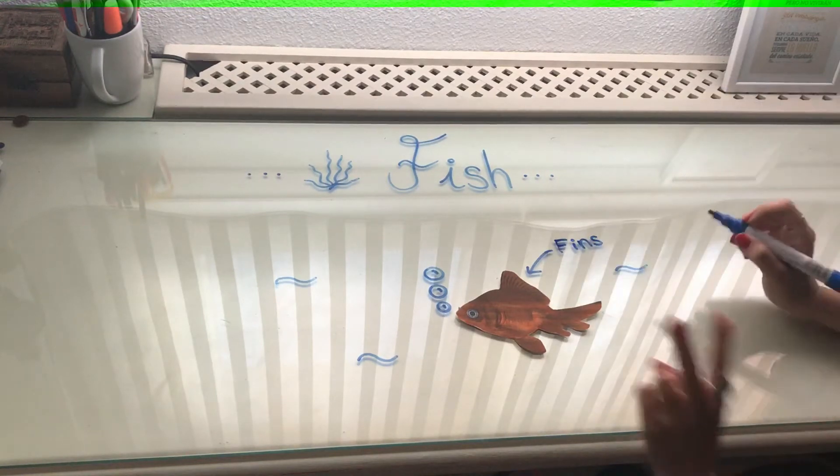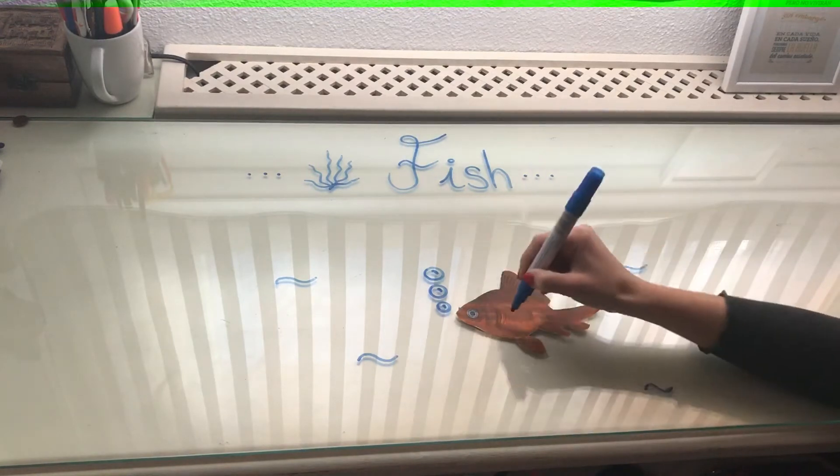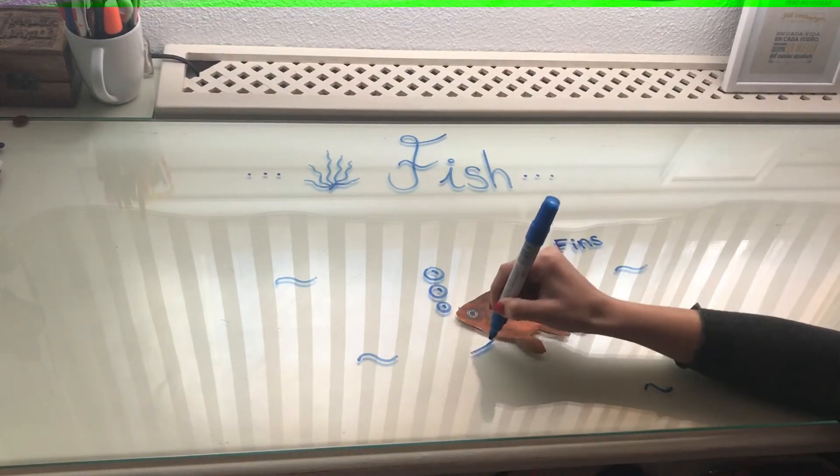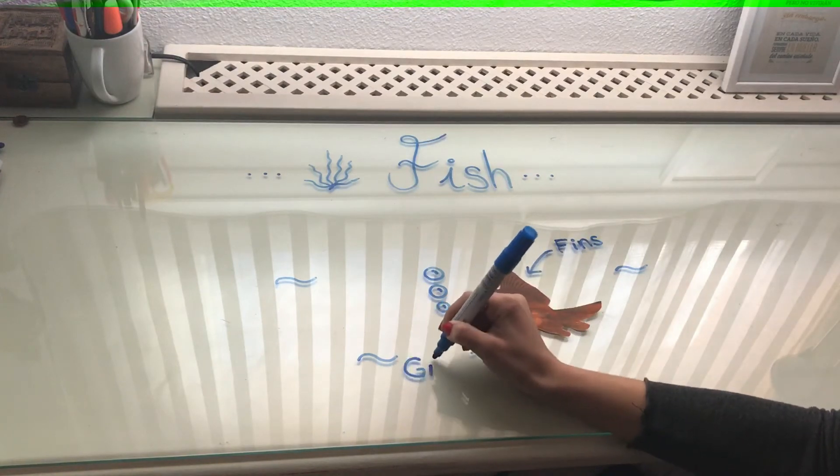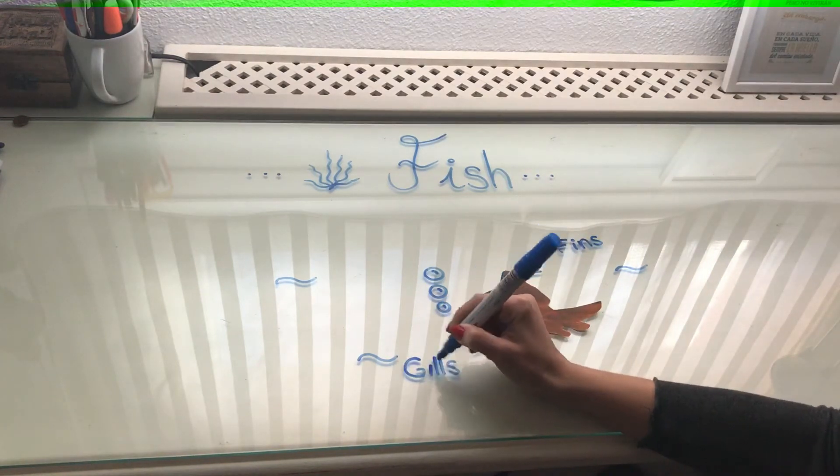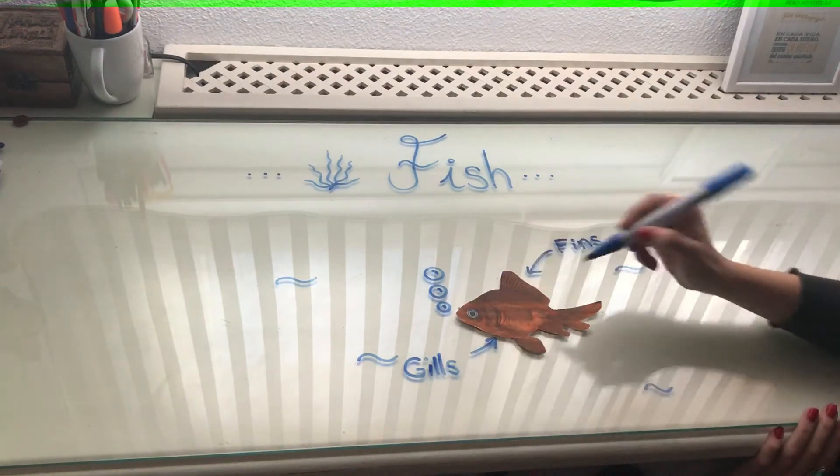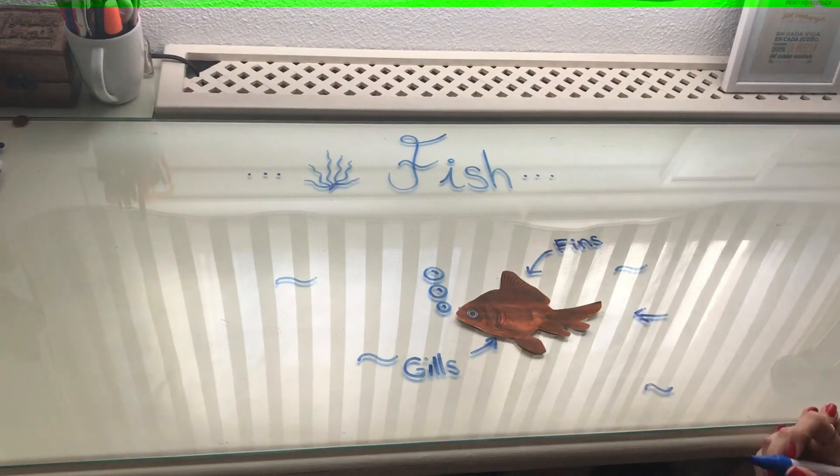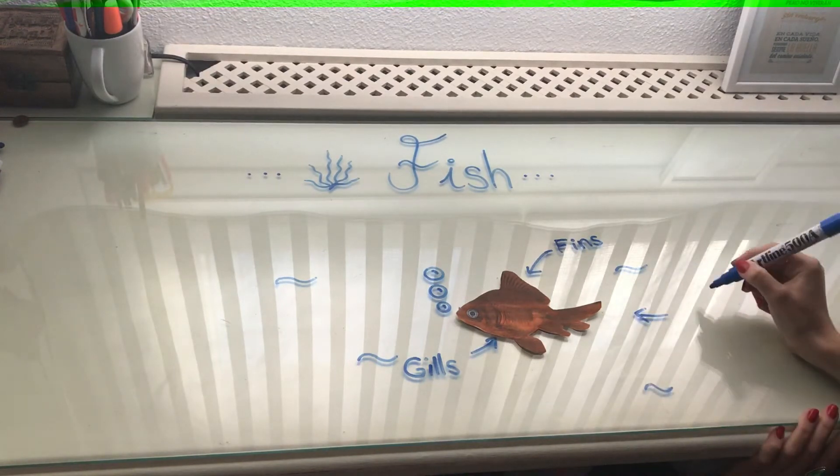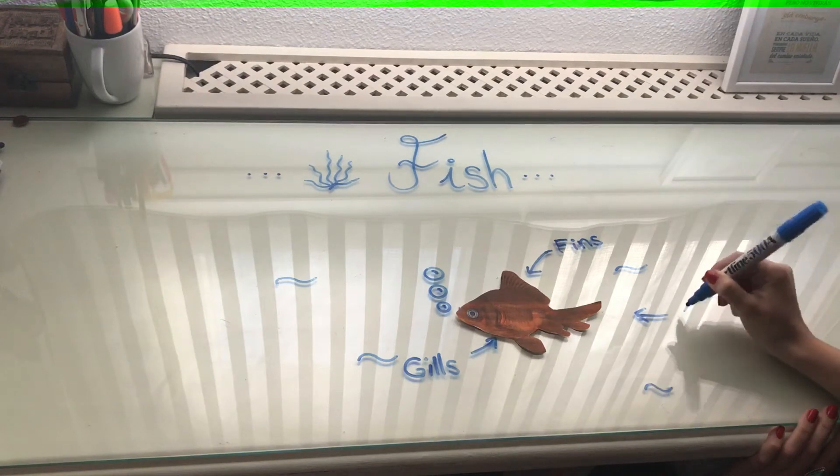The second thing that is very important is these little lines here that are called gills. And the third thing that is very important is the shape of their body. The shape of their body is called a torpedo shape. That means it's like this.